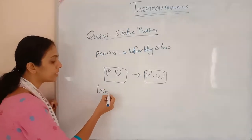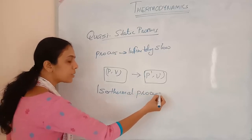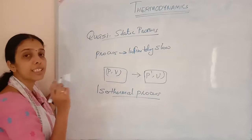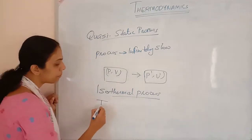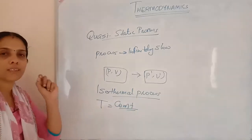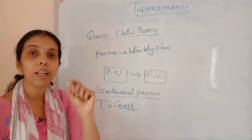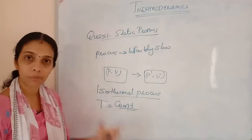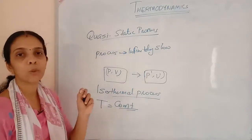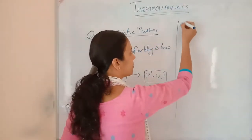Next is isothermal process. 'Iso' means same — so 'isothermal' means temperature remains constant throughout the process. If the temperature of the system remains constant, then we say it is undergoing an isothermal process.